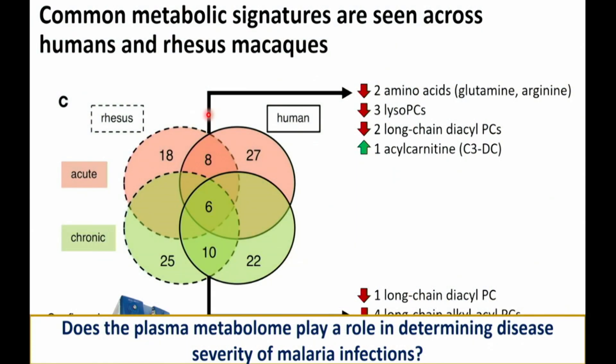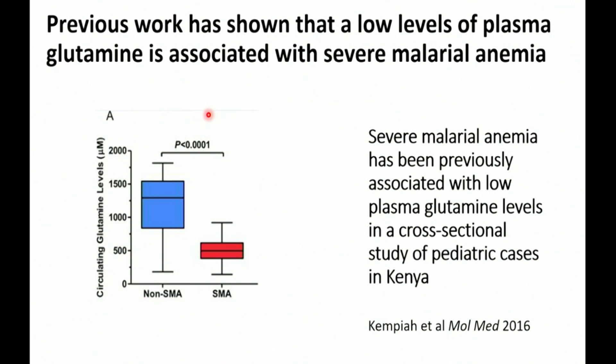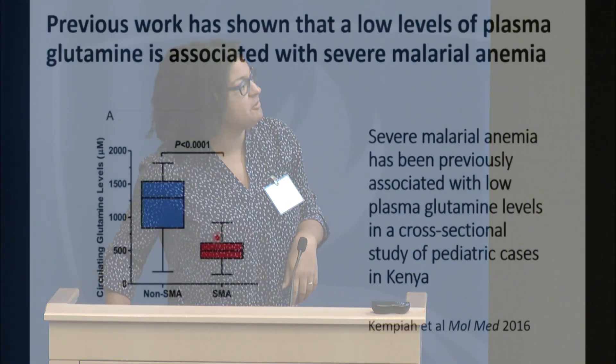This is where I've launched off in trying to answer: does the plasma metabolome play a role in determining disease severity in malaria? We see that in actual animals and humans, the bloodstream goes through really dynamic changes in actual nutrients, whereas in the lab we grow parasites in very consistent conditions. We decided to focus on glutamine specifically. Glutamine came up in our study as one of the overlapping metabolites, and there was previous literature suggesting it may play a role in severe malarial anemia — D.J. Perkins' lab showed that severe malarial anemia was previously associated with low plasma glutamine levels in a cross-sectional study of pediatric cases in Kenya, where individuals with severe malarial anemia had significantly lower glutamine in their bloodstream.